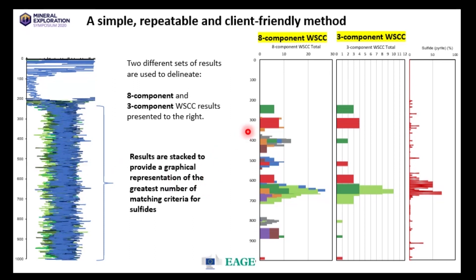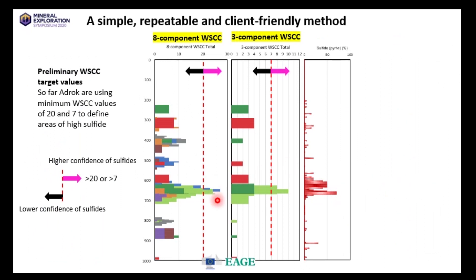The different colors represent the different harmonic results. Using eight sets of harmonic data, when stacked, the highest variability zone — the area with the highest number of occurrences — sits between about 600 and 700 meters. We can trim that to only three components and get a pretty similar result. Using an actual drill core case study, the sulfide correlation criteria match quite closely with the sulfides at depth. We've selected values of over 20 in the eight-component correlation criteria and values of over seven in the three-component criteria as representative of sulfides.